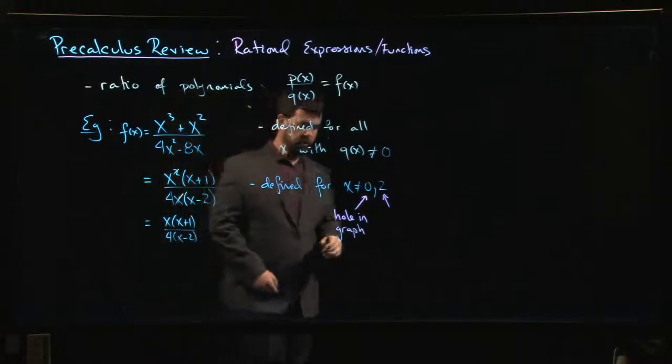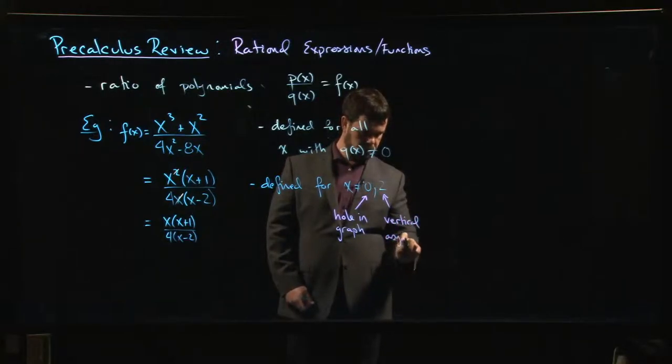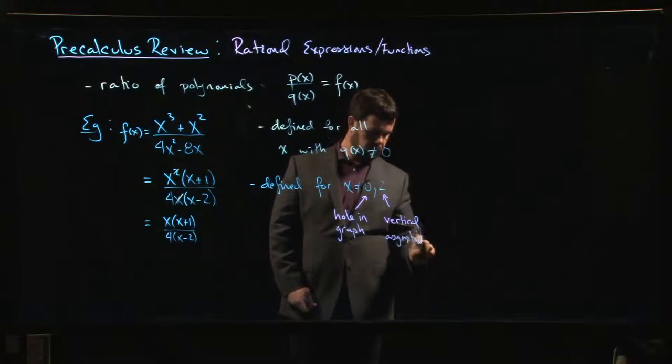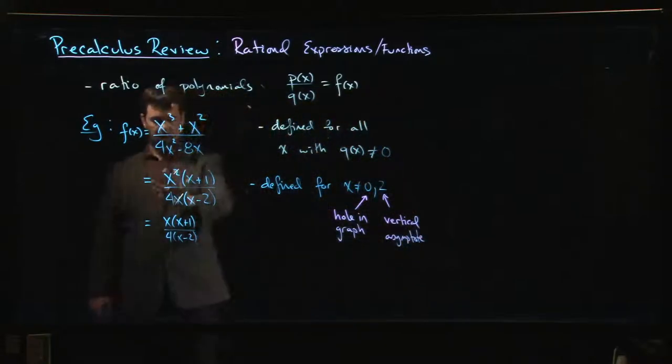What about at two? Well, any zero in the denominator that does not cancel with a zero in the numerator produces what's called a vertical asymptote. That's information you can get out of the factored form for your rational expression, as long as you keep track of that x that you canceled.